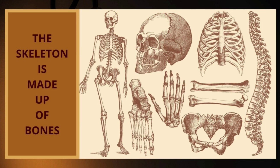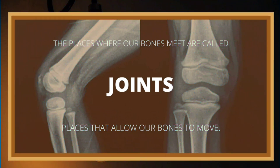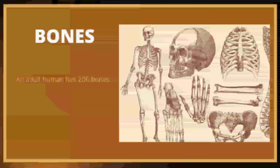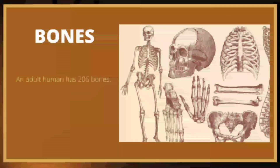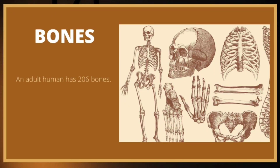The skeleton is made up of bones. The places where our bones meet are called joints. Joints are places that allow our bones to move. Do you know what everyone? An adult human has 206 bones. After this, I will show you the main bones in the human body.